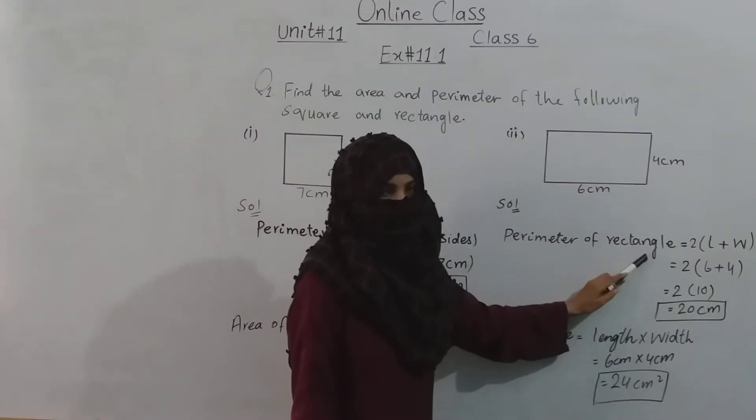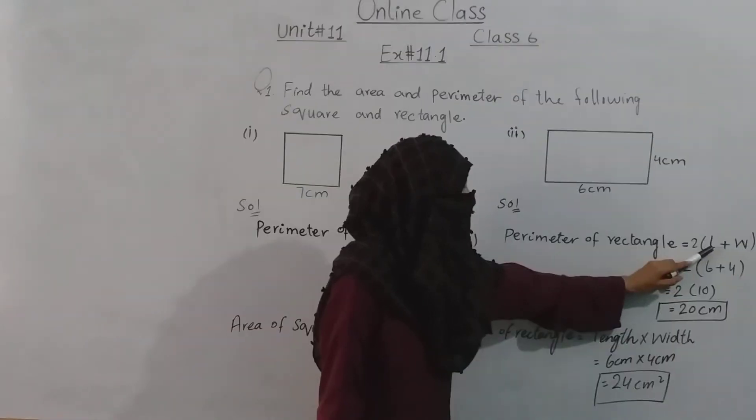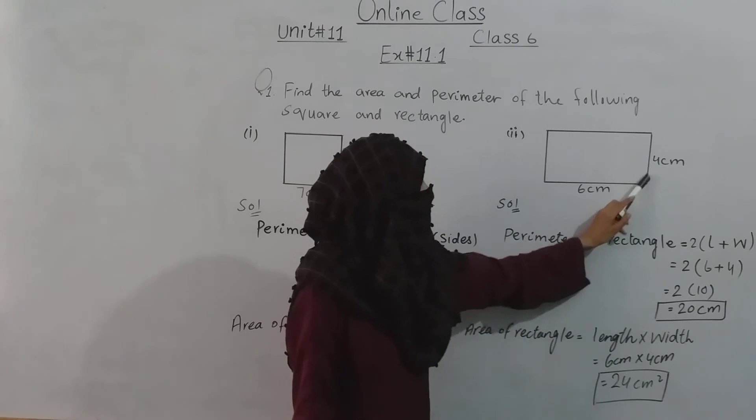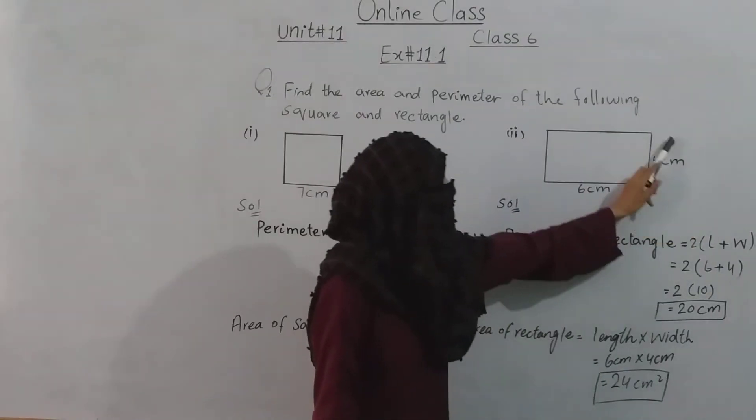The formula for perimeter of a rectangle is two multiply by length plus width. Length means lumbai and width means chudai.